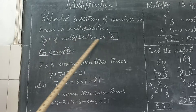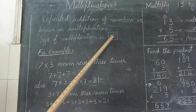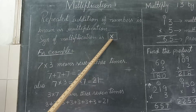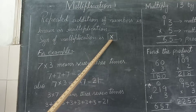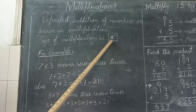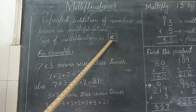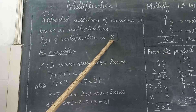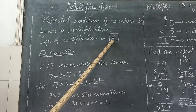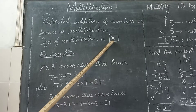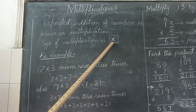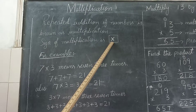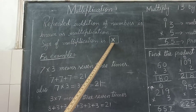Sign of multiplication — I think you already know it. You have seen this sign in the times table, for example the two ka table. Aap ne is sign ko tables ke andar dekha hai, aap ne observe bhi kiya hai. Repeated addition of numbers is known as multiplication.